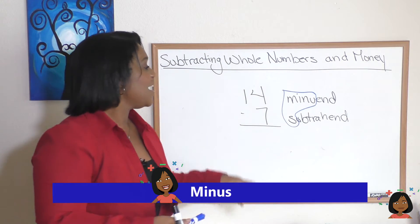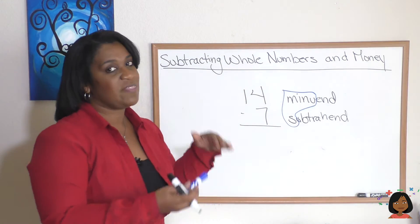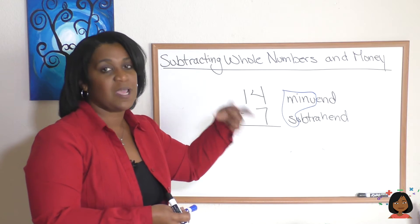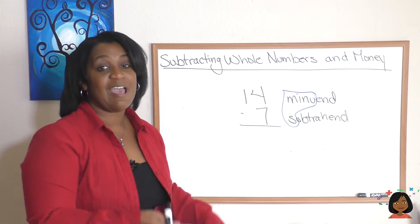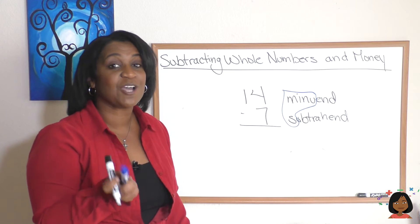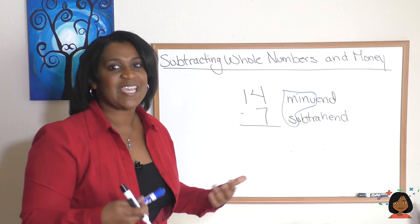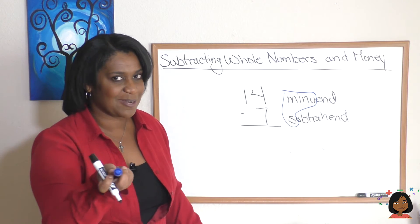Really, isn't that what subtraction is doing? We are minusing something. So that'll help you remember the M has to always be the first one, minuend then subtrahend, and this will be important when we get to talking about missing numbers in subtraction.